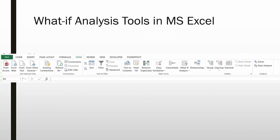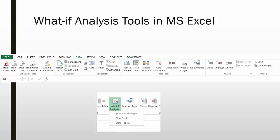The what-if analysis tools in Microsoft Excel can be found on the data ribbon. They are located in the data tools group under what-if analysis. When the what-if analysis dropdown has been selected, you'll find the scenario manager, goal seek, and data tables.